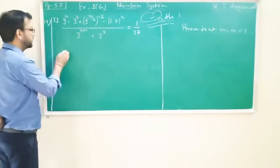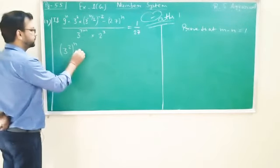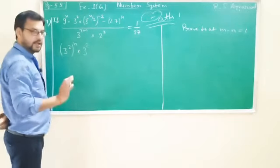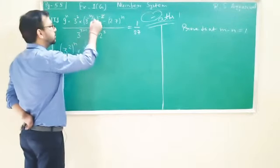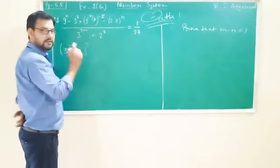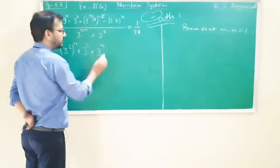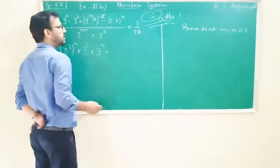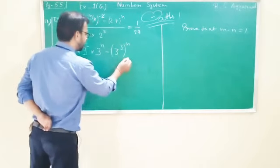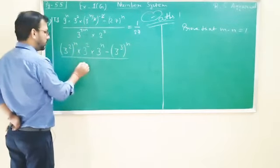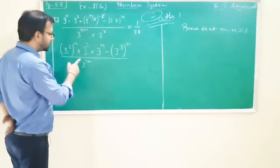9 को क्या कह सकते हैं? Yes, 3 square. So (3 square) whole power n into (3 square) — powers की वो power से multiply हो जाएगी — 2 से 2 cancel, minus minus plus — it means 3 to the power n. Minus 27: 3 to the power 3. 9 — 3 squared — 27 upon 3 to the power 3m.